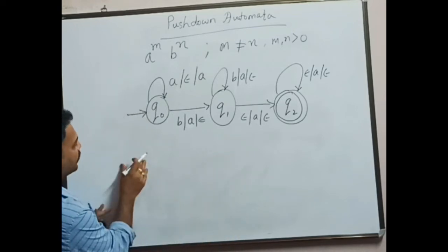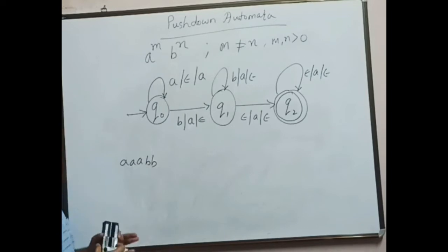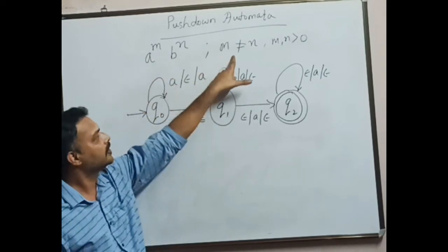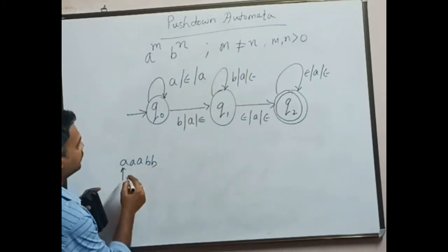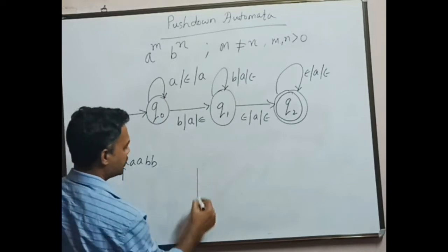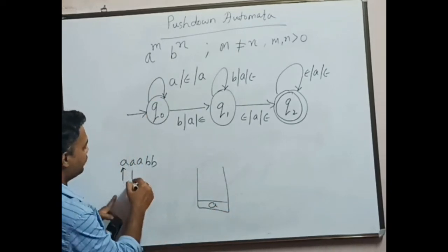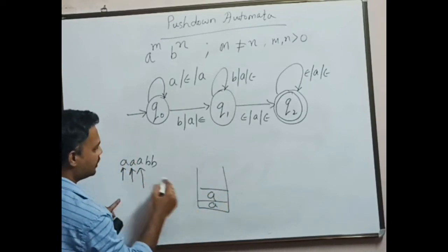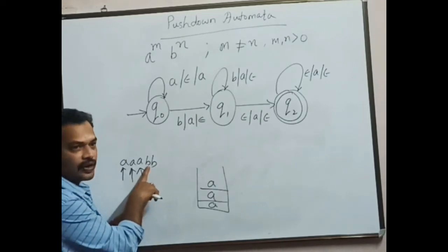Let us take one string into consideration, that is aaabb, for example. This is all about m greater than n, which is nothing but m not equal to n. The first a is encountered by the PDA, it will push it onto the stack. Next a is encountered, it will be pushed onto the stack. Next a again, it will be pushed onto the stack.